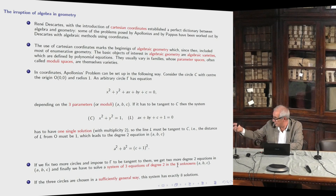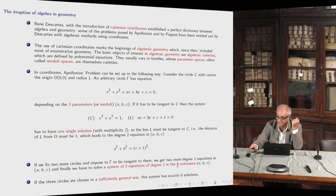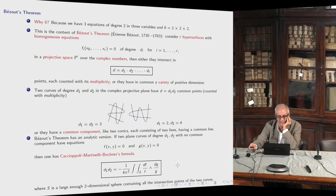If we fix two more general circles and impose on the general circle to be tangent to all three, we have three equations of degree two. Descartes says the number of solutions of three equations of degree two in three parameters a, b, c is eight. Why eight? Eight is two times two times two — and this is the content of Bézout's theorem.